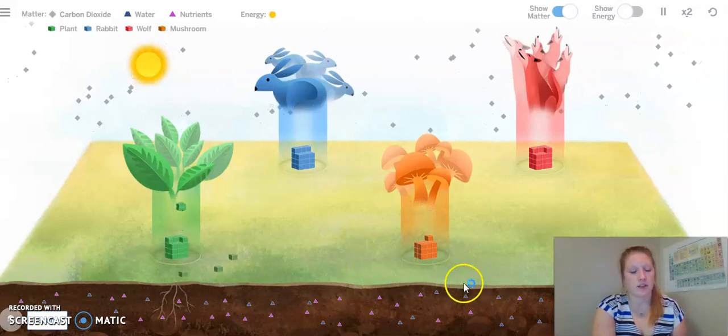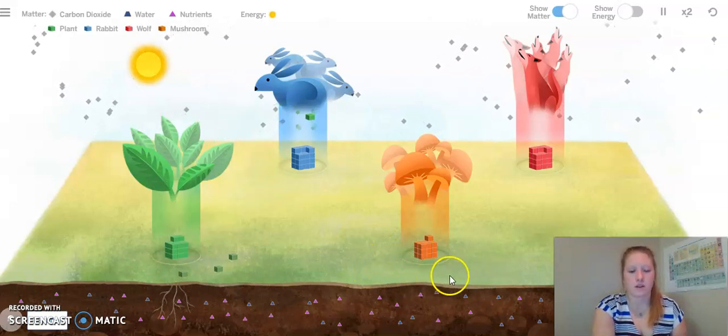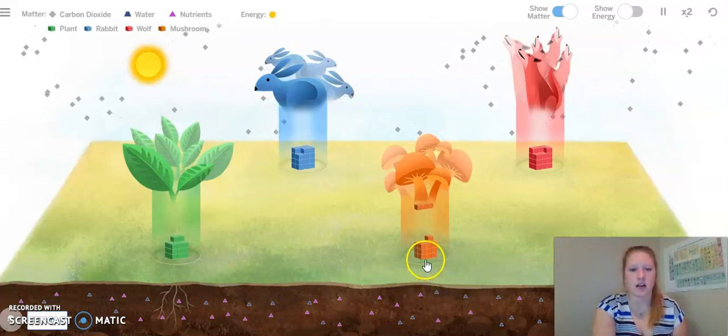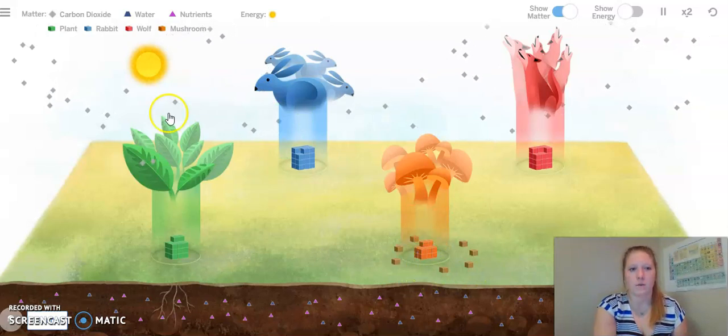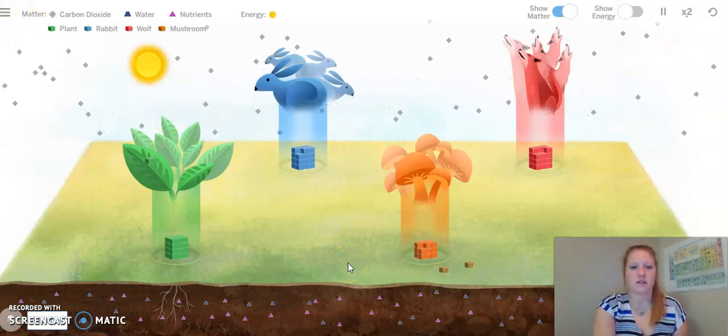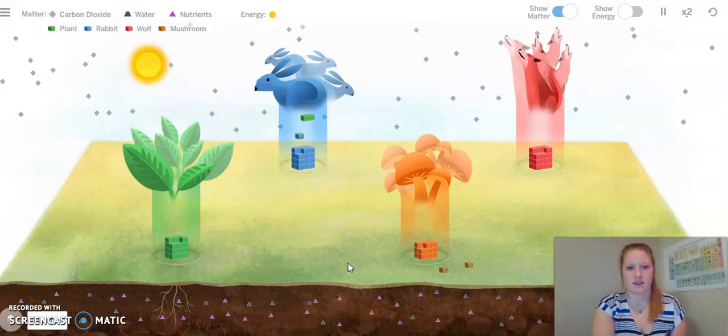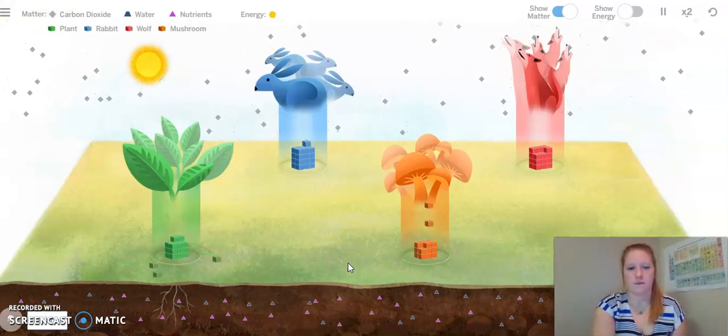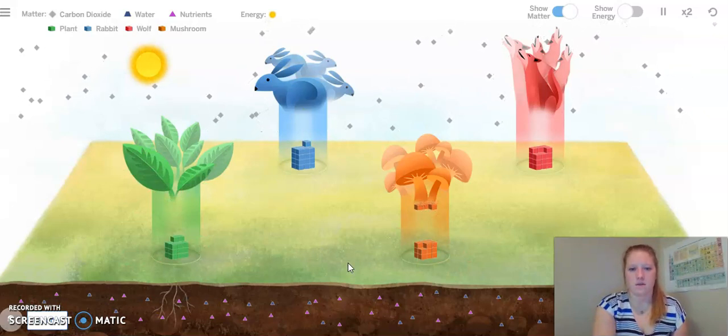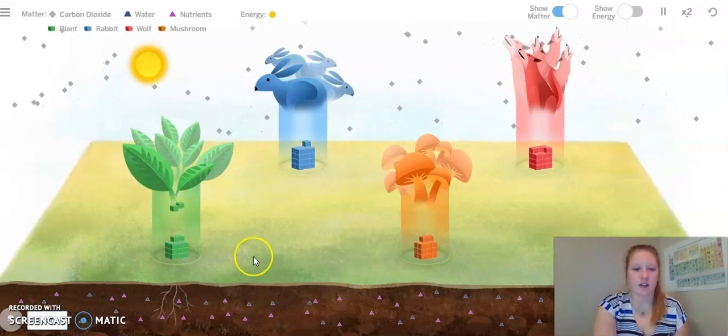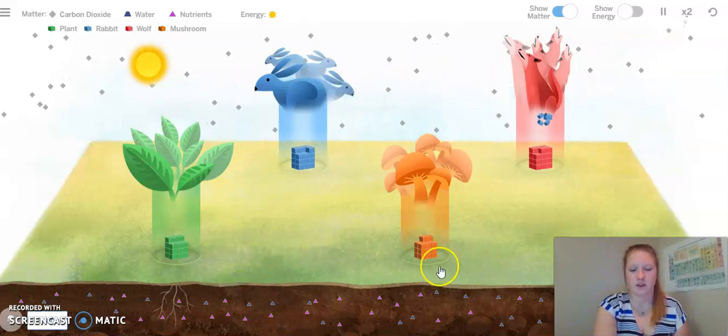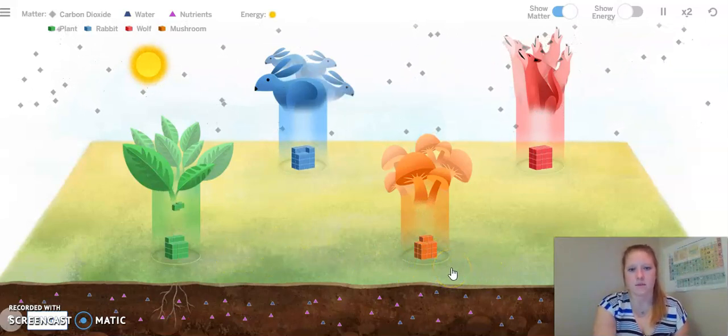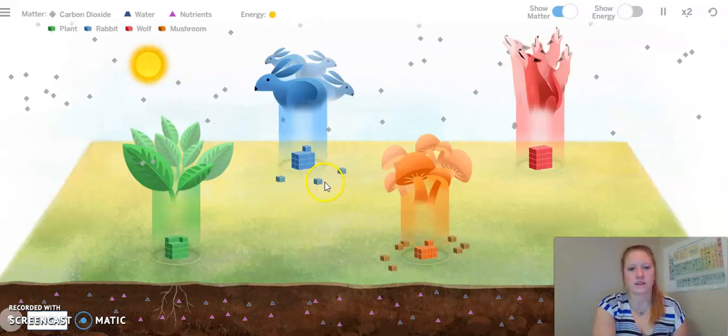Matter from the soil is going into the decomposer. Or I suppose this wouldn't be soil. This would be the earthworms where the millipedes are and even where droppings are. Let's observe for a couple more moments. Again, I see most of the matter for the decomposers coming from the plant and from the ground. I also have seen some from the rabbits and the wolves.